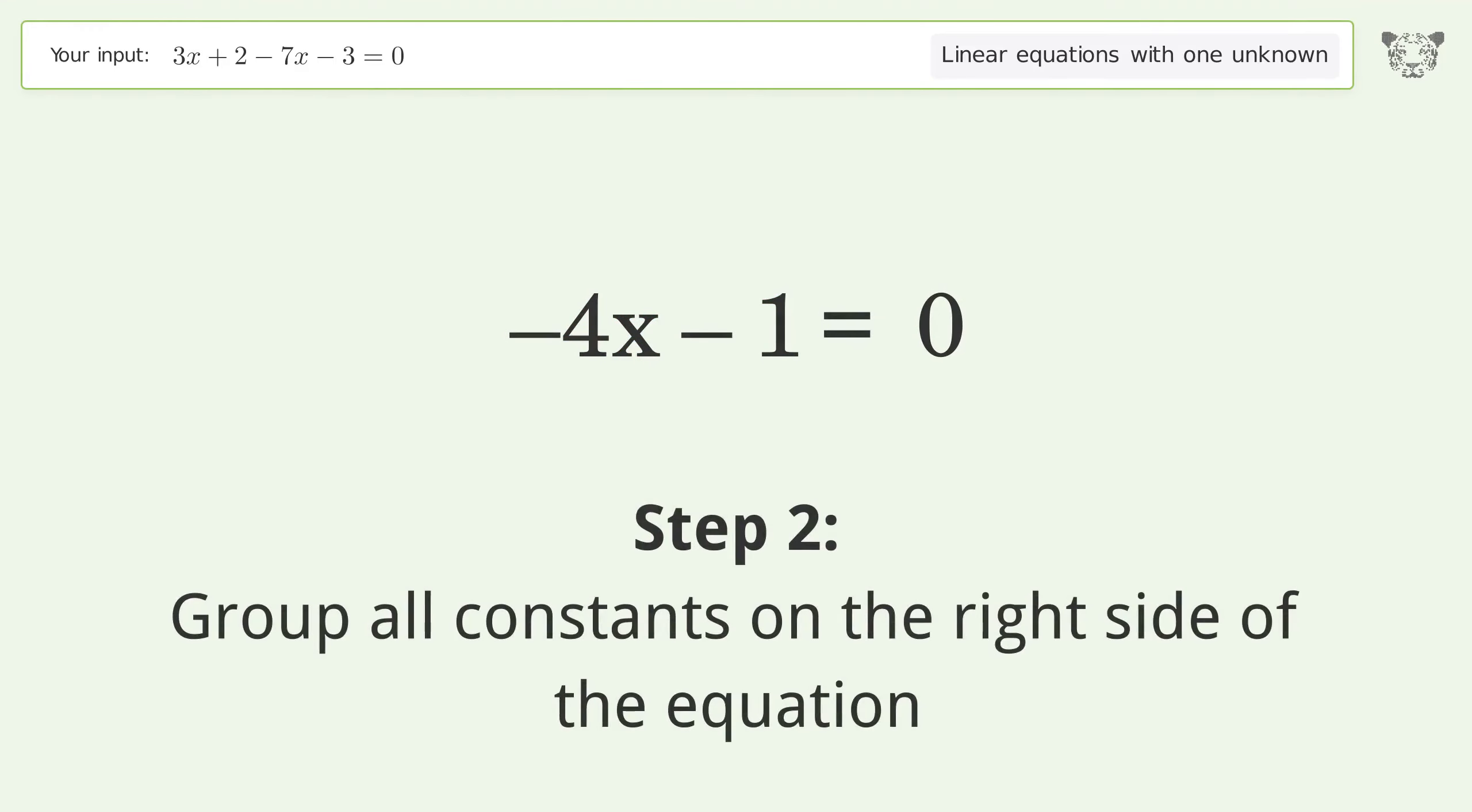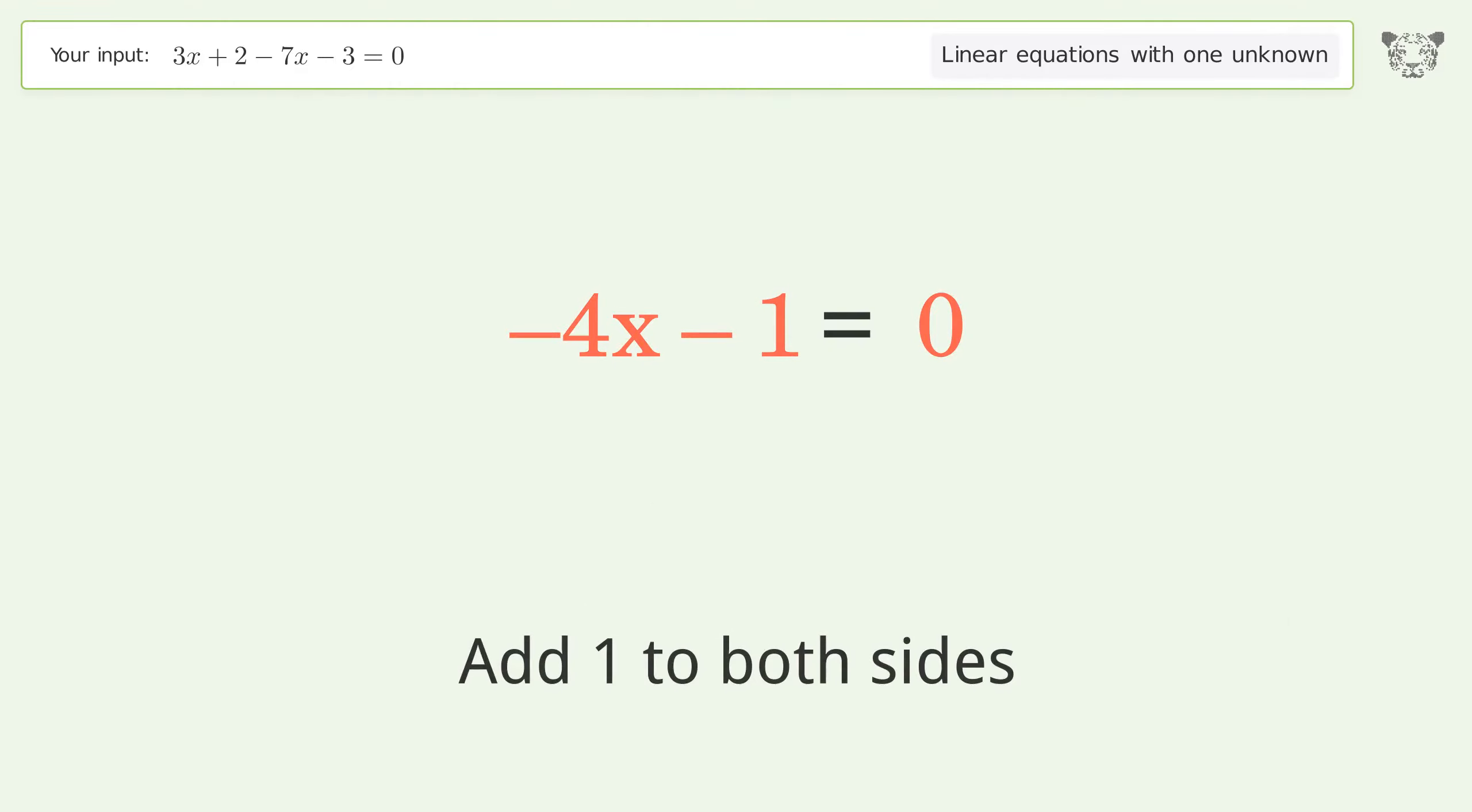Group all constants on the right side of the equation. Add 1 to both sides. Simplify the arithmetic.